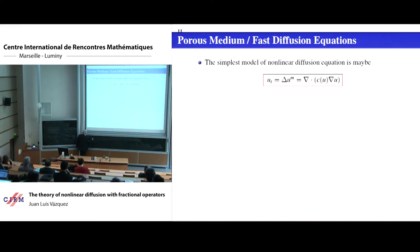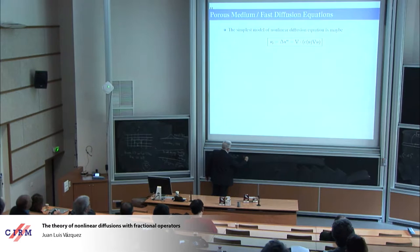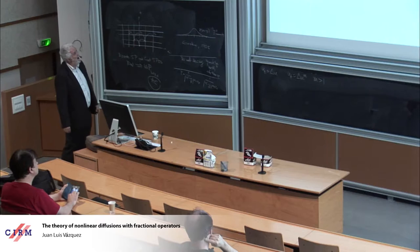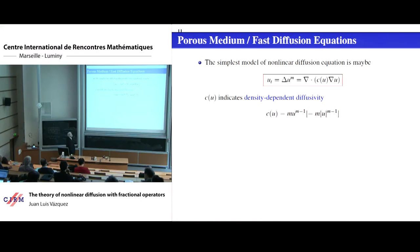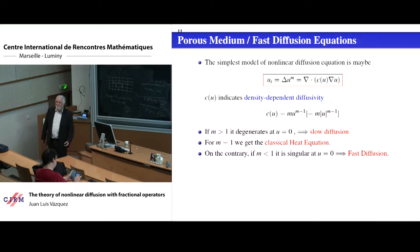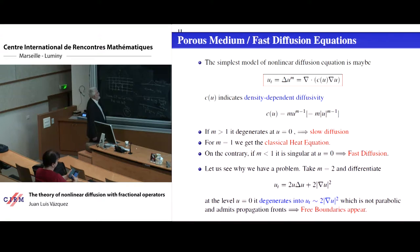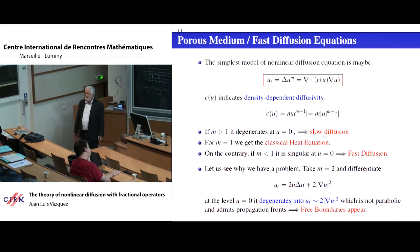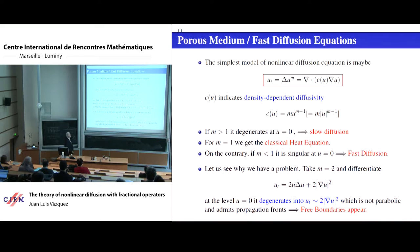If M is larger than 1, the coefficient of diffusion is M times u^(M−1), which vanishes when u equals zero. This is called slow diffusion and creates free boundaries. The study of all this theory took many years, because the nonlinearity makes many things appear that are very different from the classical heat equation. In the case M less than 1, some people were not happy to do it until they discovered the Yamabe problem, and that was so good. There were many other problems too.